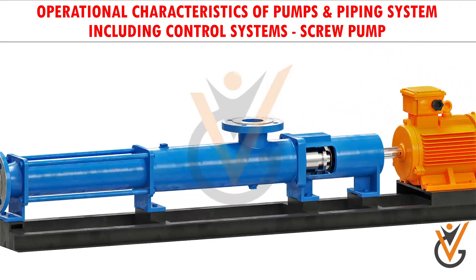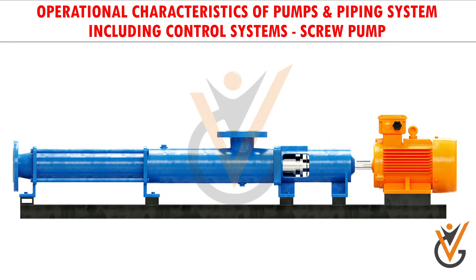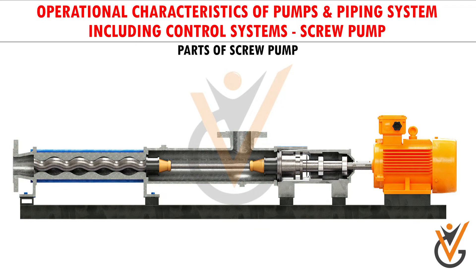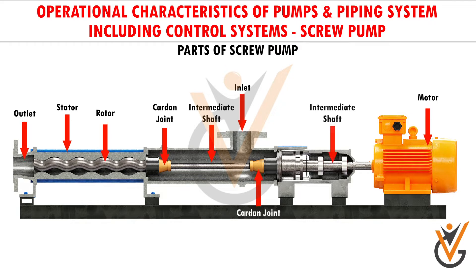Other marine uses include loading and offloading, and burner feed for inert gas generators. Parts of a screw pump include: motor, outlet, inlet, stator, rotor, cardan joint, intermediate shaft, and transmission shaft.